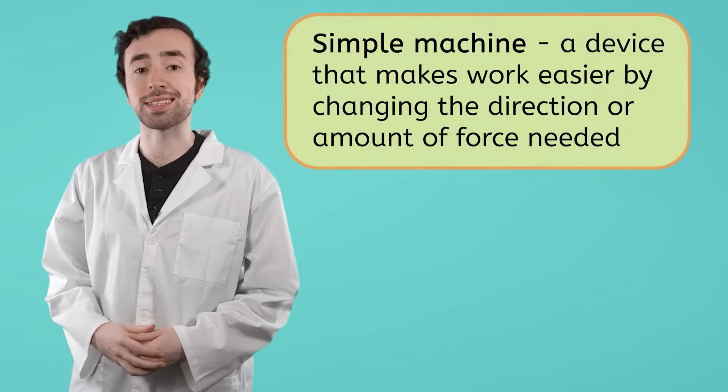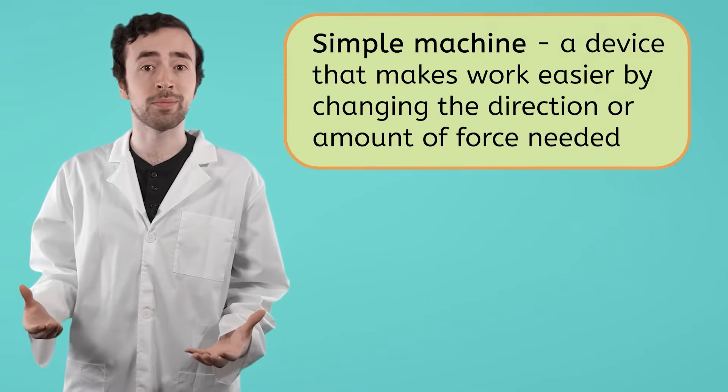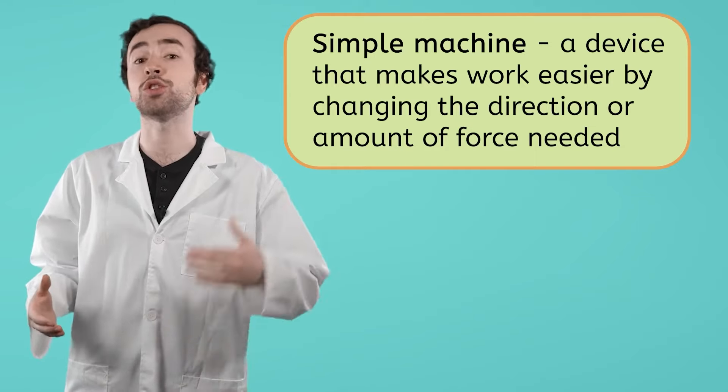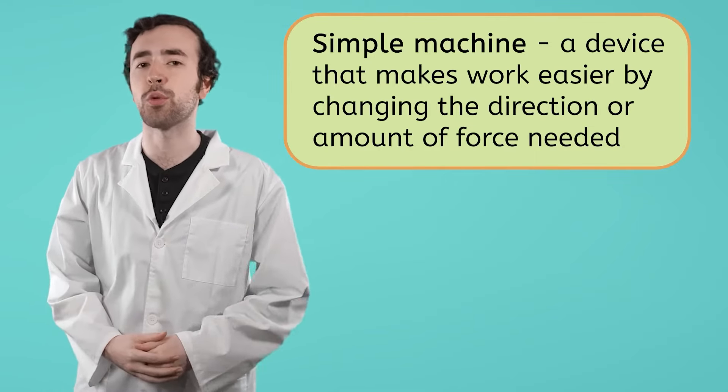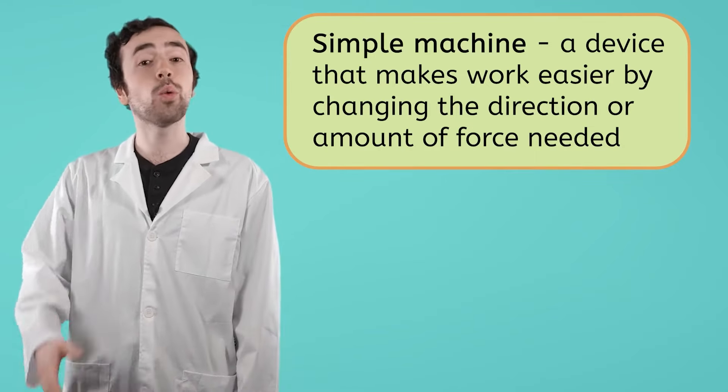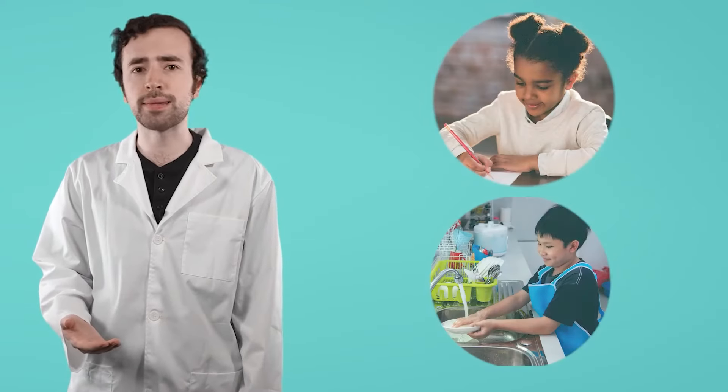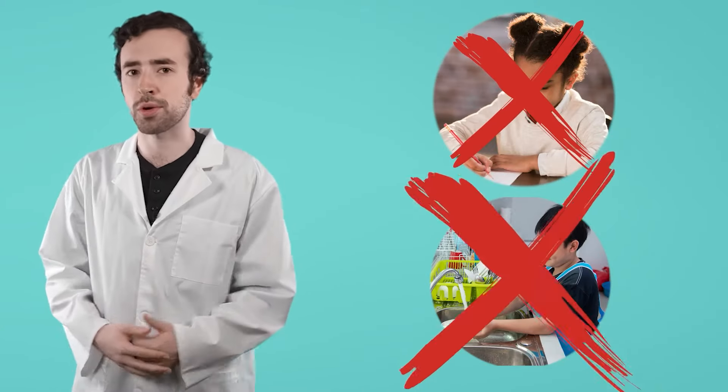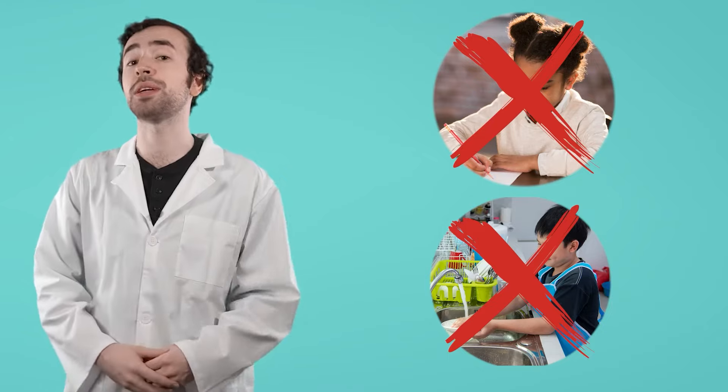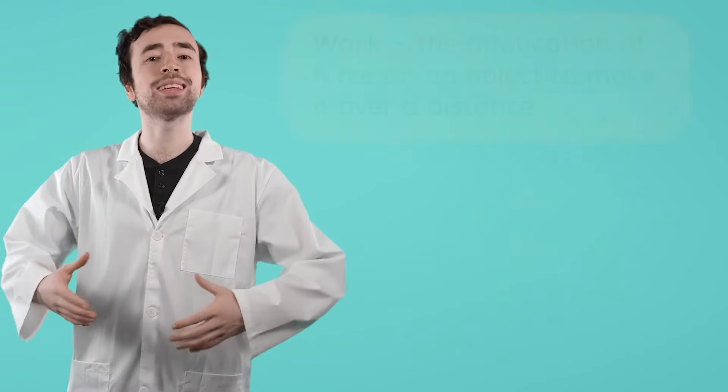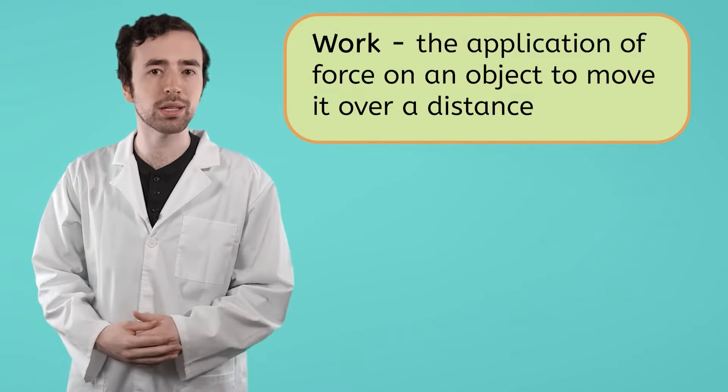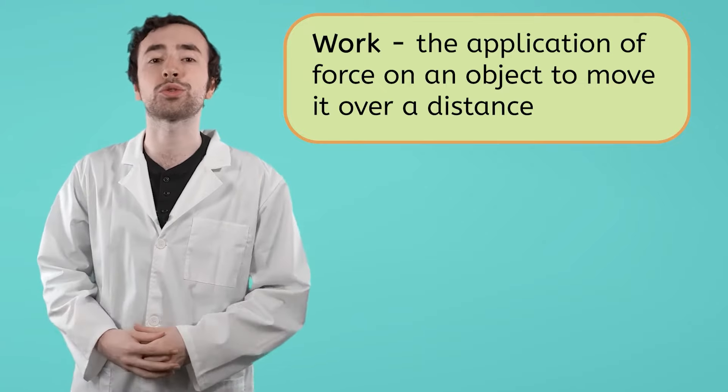A simple machine is a machine designed to make work easier, either by changing the direction or the amount of force needed. Now, when I say work, I don't mean like your homework or your chores or anything. No, in science, work means something else. Work is exerting a force on an object and causing it to move a certain distance.